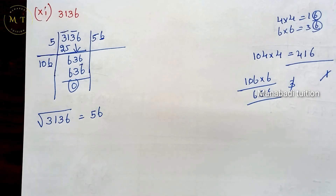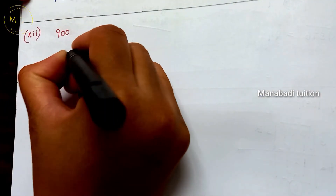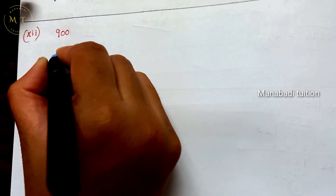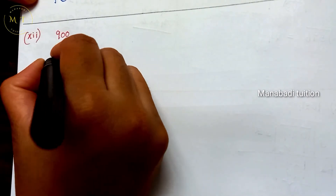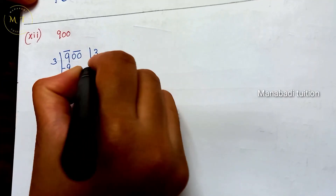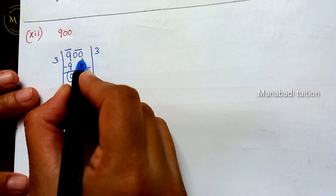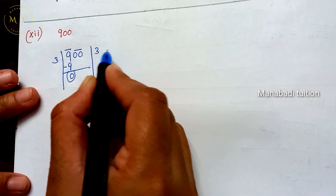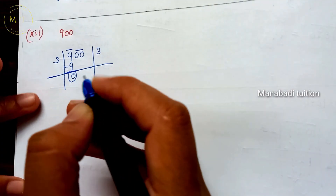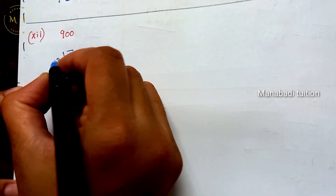Next, last problem — the 12th one. So 11th one is 900. 9 double 0 — 2 zeros. 9 is the same. So 9 minus 9 is the same. And 1675 — next number is the same. So the count of 2 zeros and 9.